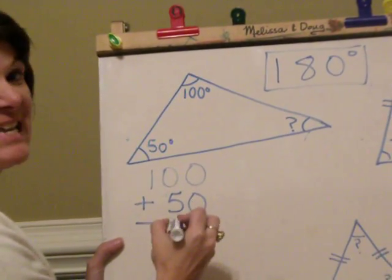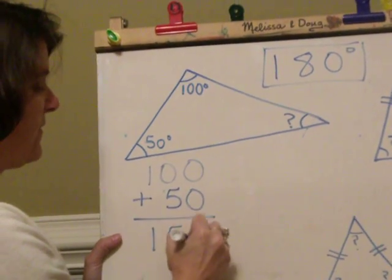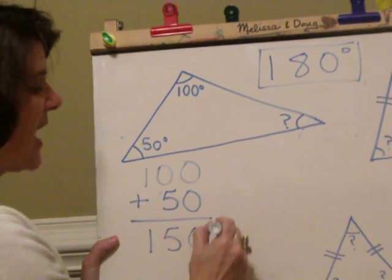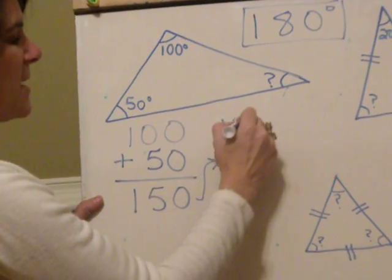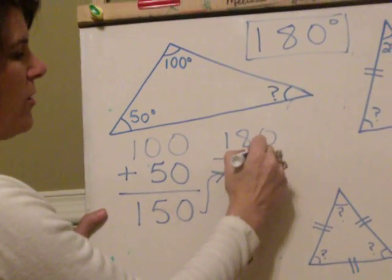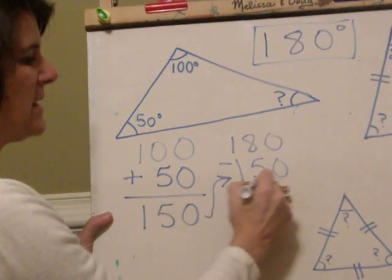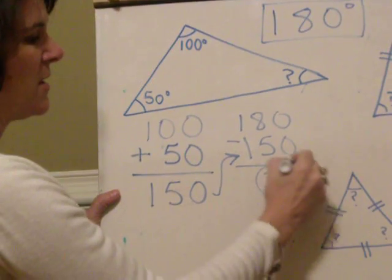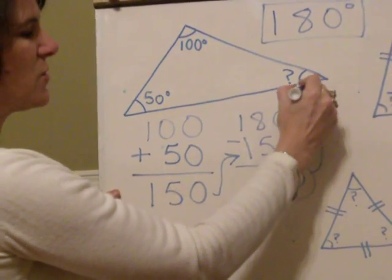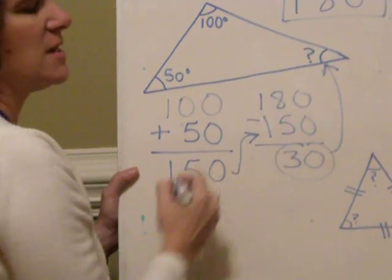And then I subtract this from 180, because I know all three angles add to 180. And I get thirty. So the answer to this mystery angle is thirty degrees.